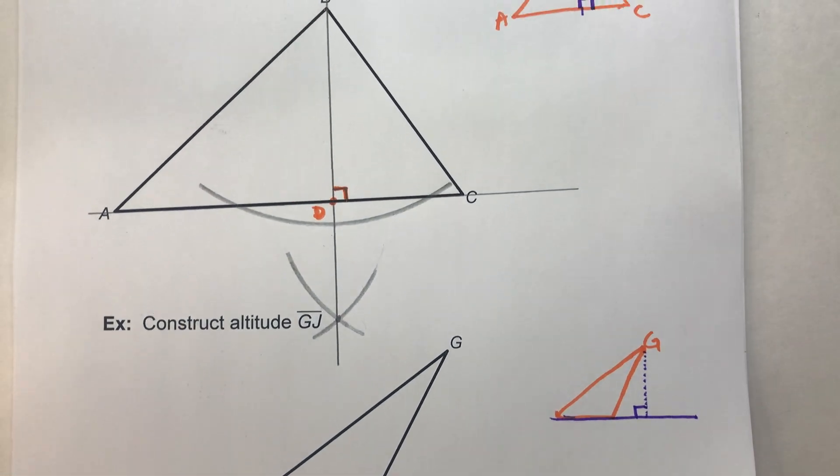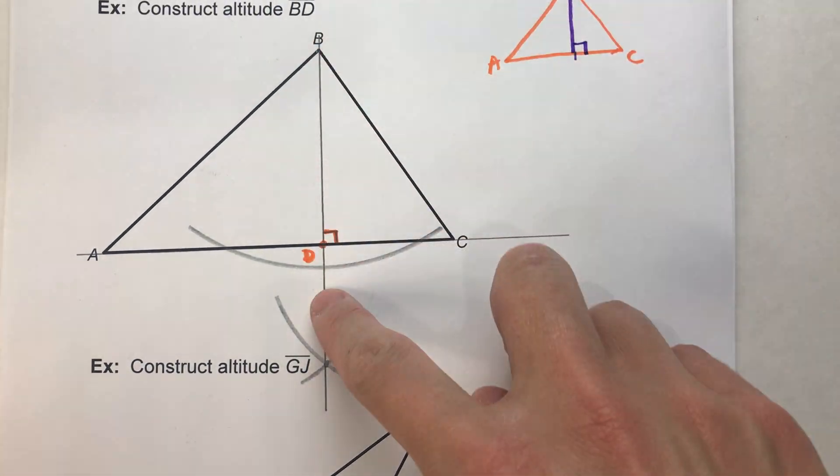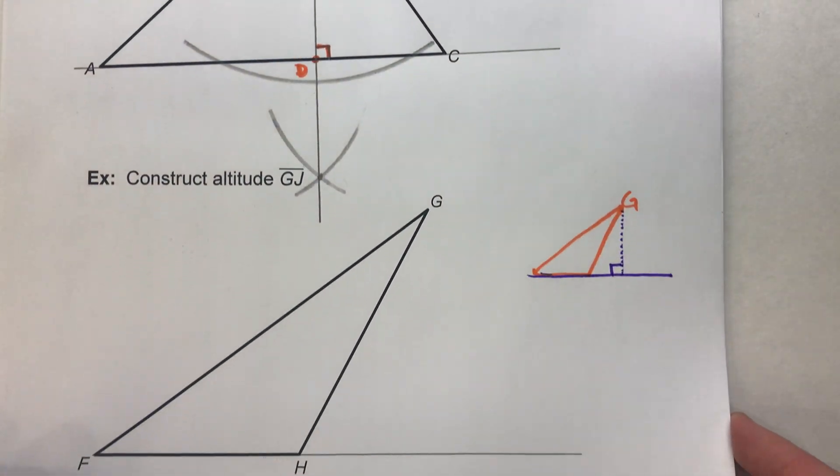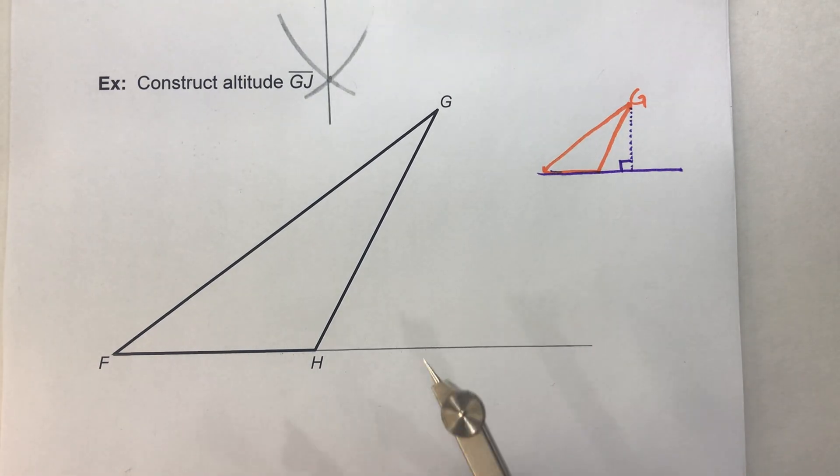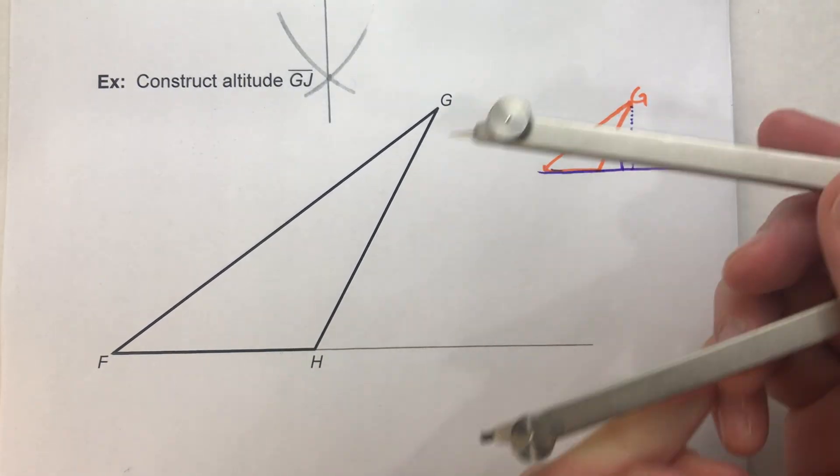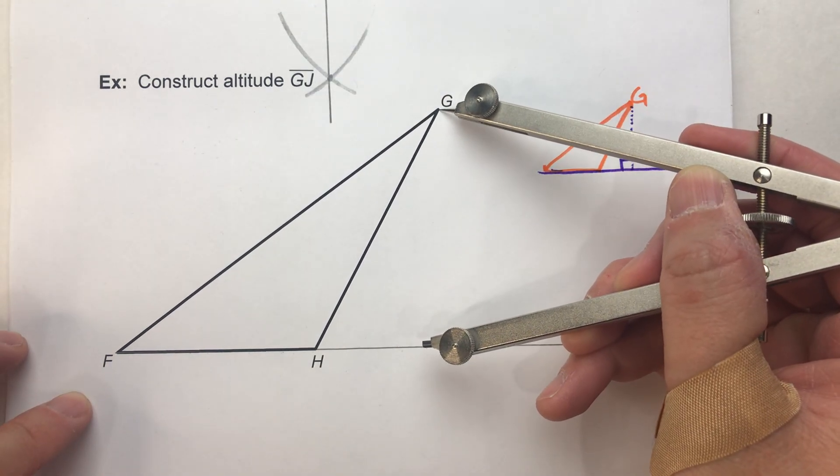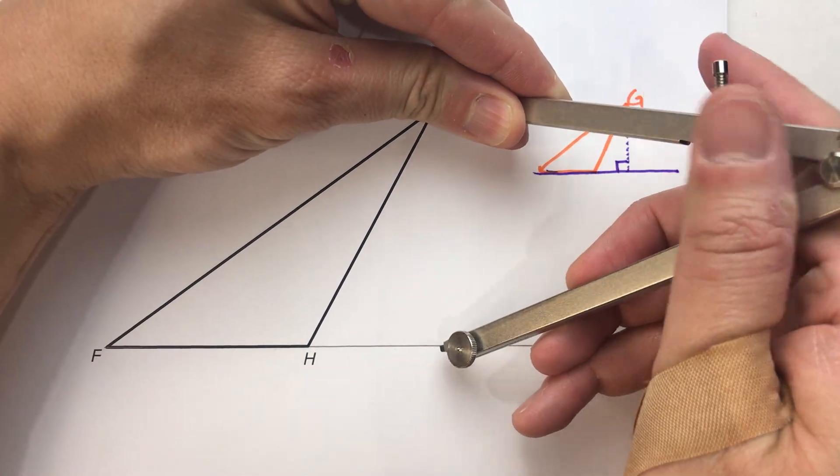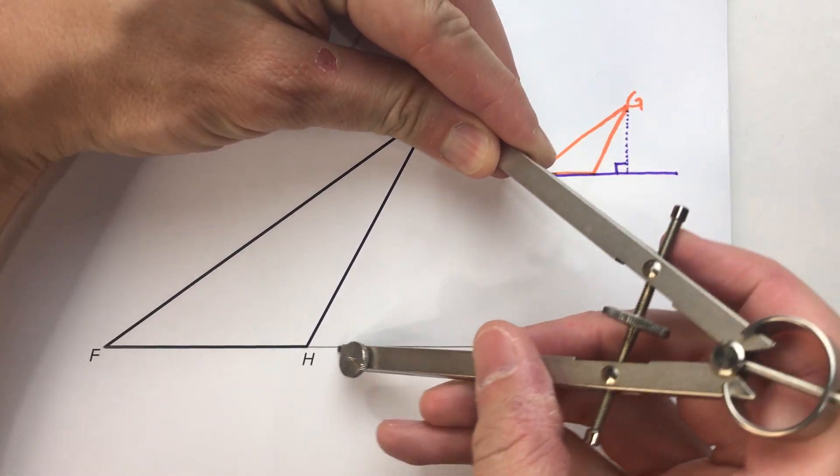now it's not much different than the way we did before. We're going to take our compass and we're going to set it so it is big enough so that from point G, I can hit that line in two places. It needs to be a little bit bigger. There we go.